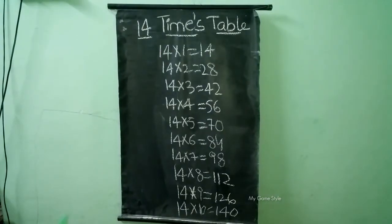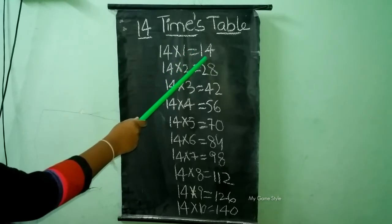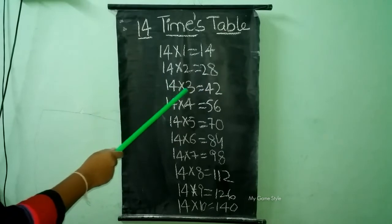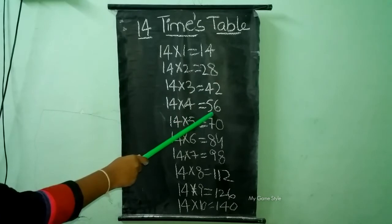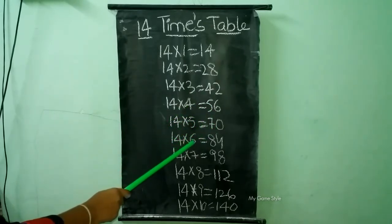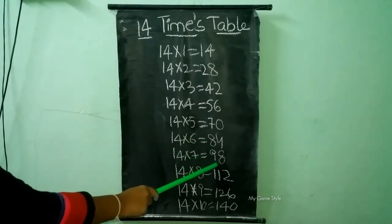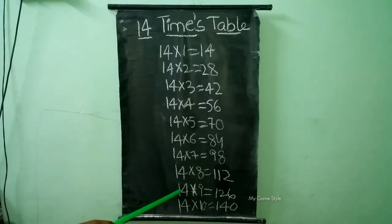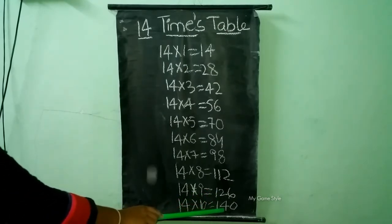14 times table. 14 times 1 is equal to 14. 14 times 2 is equal to 28. 14 times 3 is equal to 42. 14 times 4 is equal to 56. 14 times 5 is equal to 70. 14 times 6 is equal to 84. 14 times 7 is equal to 98. 14 times 8 is equal to 112. 14 times 9 is equal to 126. 14 times 10 is equal to 140.